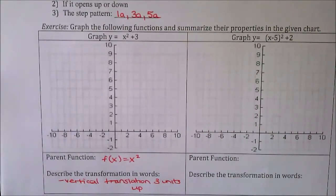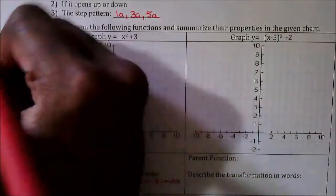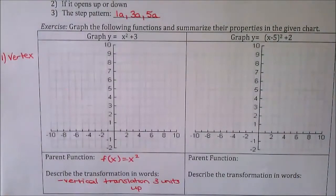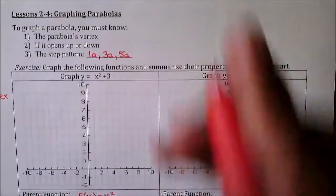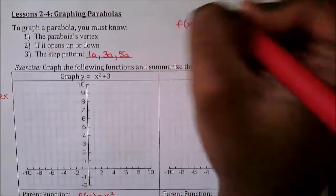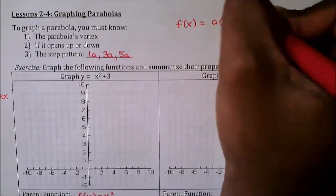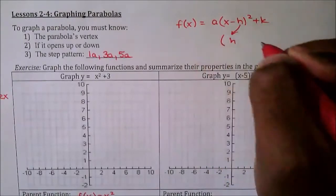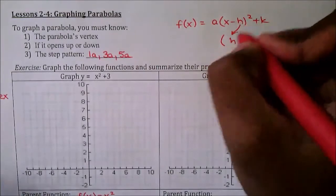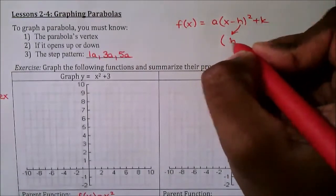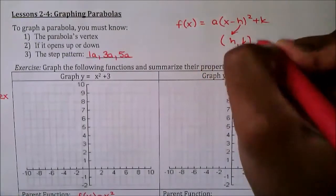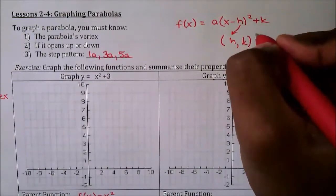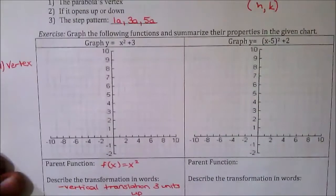We still need to find a way to graph this equation. The first thing we need to know is the vertex of this parabola. Quick review: if you're given the formula in vertex form, the vertex h value — remember, you take the opposite. If it's negative, you put positive; if it's positive, you put negative.